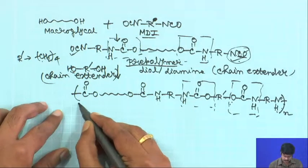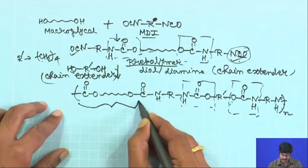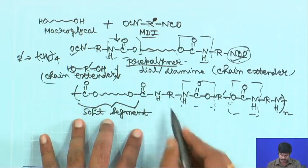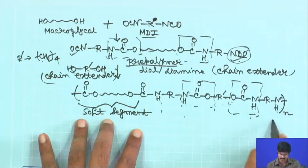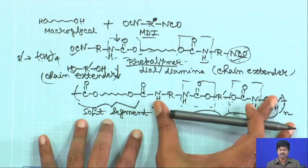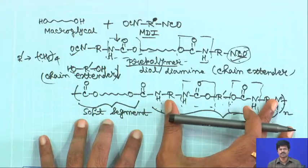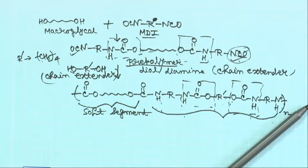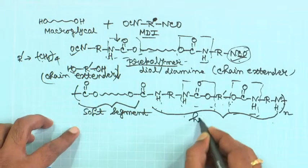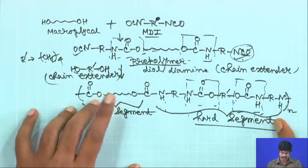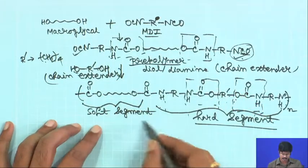The polyester segment you have got in the repeat unit is basically a soft segment because you have a flexible polyester linkage. However, if you look at the urethane linkage there is a lot of possibility of hydrogen bonding interactions between different chains, and that gives it a characteristic. This particular part — the urethane part — is your hard block with a higher glass transition temperature, while the polyester is the soft block with a lower glass transition temperature. So in the repeat unit you have both hard segment and soft segment.